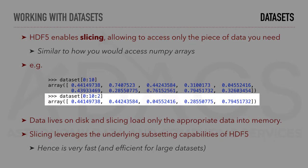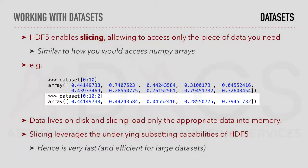Similarly, we can access the first 10 elements of a dataset with a step of 2, meaning we will return only 5 elements. Slicing leverages the underlying subsetting capabilities of HDF5, and is therefore very fast and efficient for large datasets.